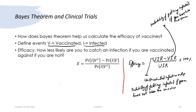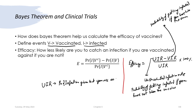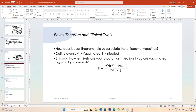The unvaccinated infection rate means the probability of getting infected given that you have not taken the vaccine, i.e., P(I | V complement). The vaccinated infection rate is the probability of getting infected given that you are vaccinated, i.e., P(I | V). With this you can define the efficacy of a vaccine using these conditional probabilities.